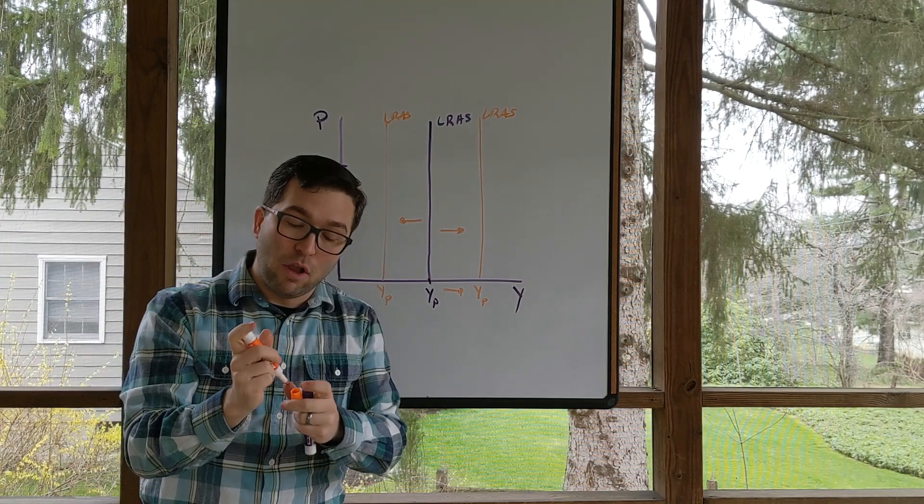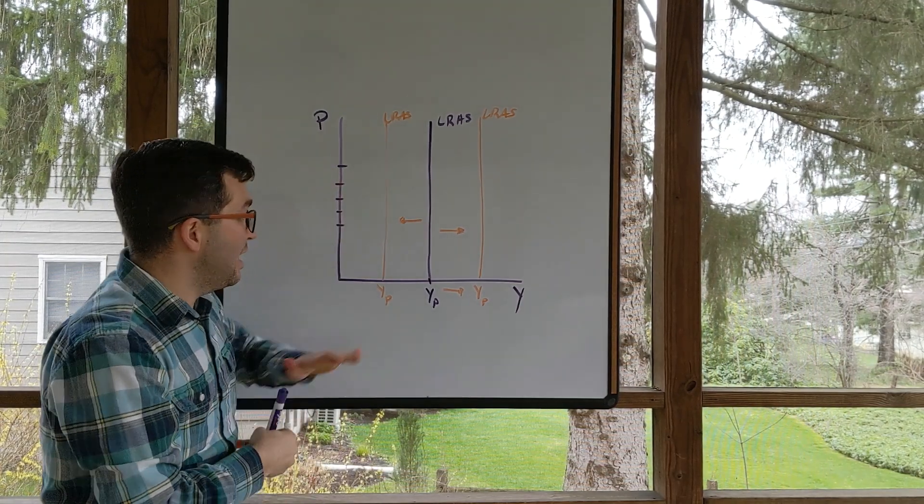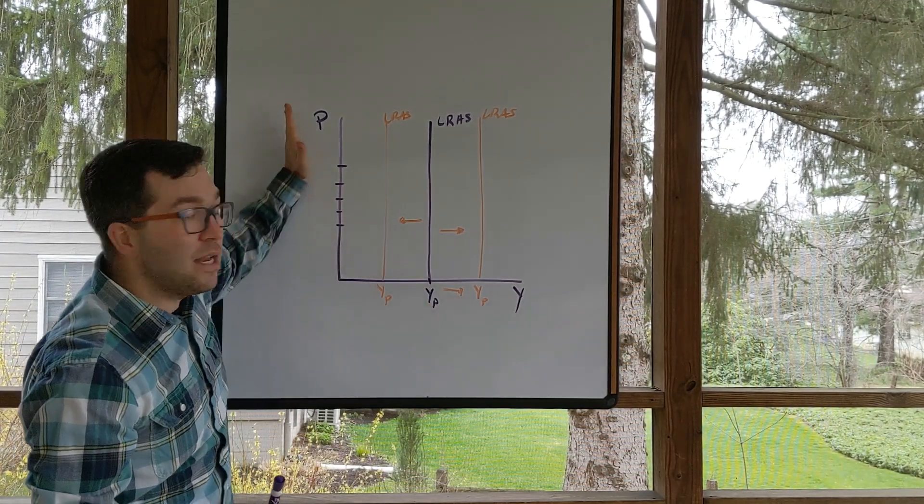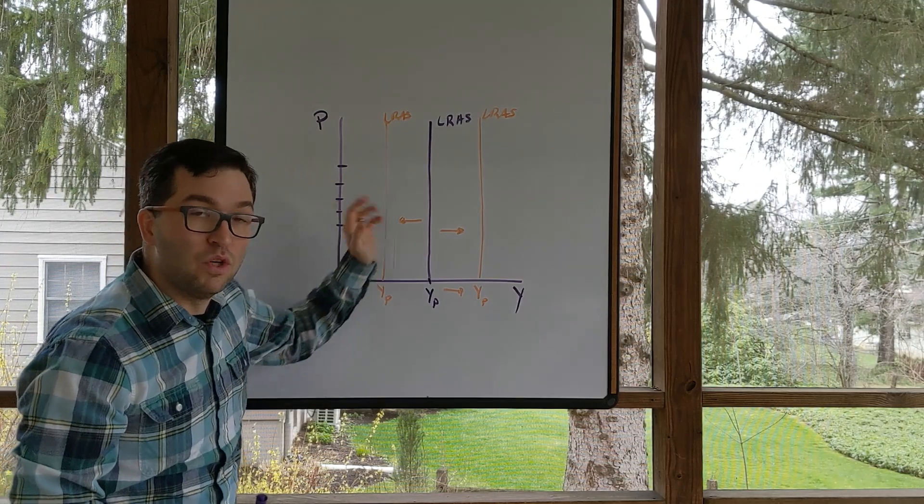The key thing you need to know about long run aggregate supply is that the output does not depend on the price level in the long run, which is why it's vertical.